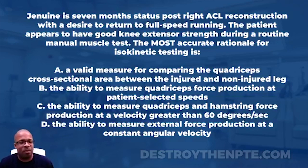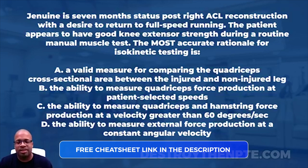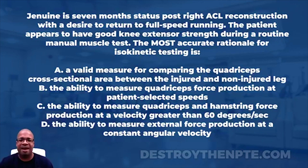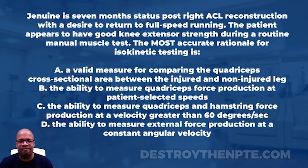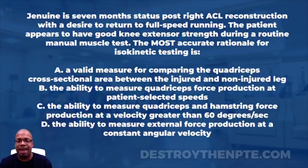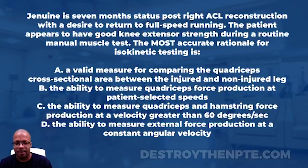For this week's Challenge Wednesday, we have Genuine, who is seven months status post right ACL reconstruction with a desire to return to full speed running. The patient appears to have good knee extensor strength during a routine manual muscle test. The question asks: what is the most accurate rationale for isokinetic testing? Answer choices: A) a valid measure for comparing quadriceps cross-sectional area between injured and non-injured leg; B) the ability to measure quadriceps force production at patient-selected speeds; C) the ability to measure quadriceps and hamstring force production at a velocity greater than 60 degrees per second; D) the ability to measure external force production at a constant angular velocity.